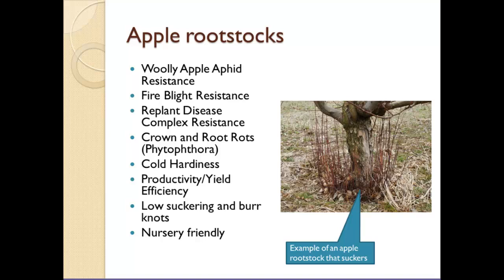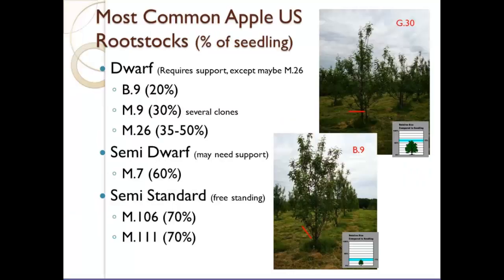The most common apple rootstocks include dwarf types B9, M9, and M26. A B9 is 20% of a full-size tree, so they can really be brought down in size. A semi-dwarf like M7 is about 60% of a full-size tree. Semi-standard rootstocks are about 70% of a freestanding tree. The dwarfs require support, and even M26 I would probably put support on. M7 definitely needs support at least for the first five years or so. M106 and M111 are freestanding and do not require support. There's a question: are apples with frost ring okay to eat? Yes — it's just a cosmetic defect like a scarring on the skin, similar to russet apples. No dietary problems with it.